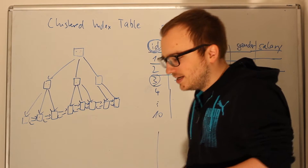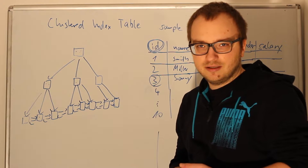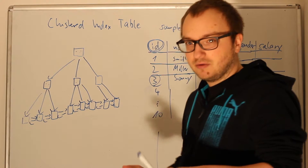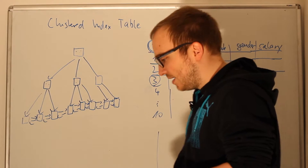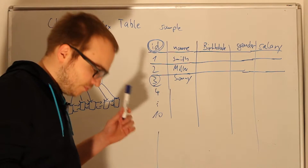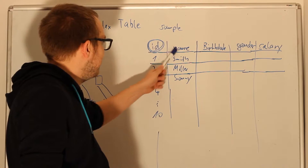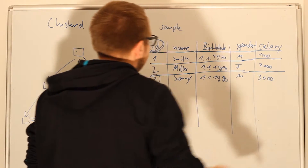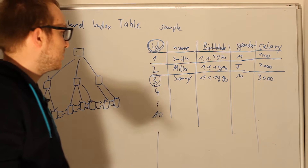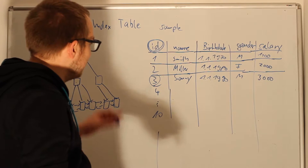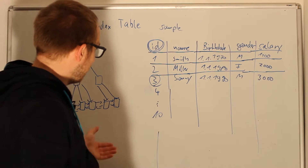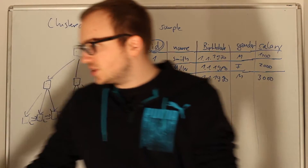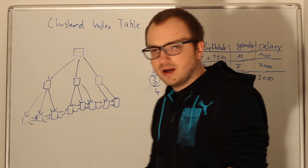So what we now want to cover is: we have a clustered index, but what about non-clustered indexes? What are they good for? We'll see. We already have a few more columns on our table — we had ID and name last time, and now we have birthday, gender, and salary. If I look for a special ID, for instance ID 5, we can just traverse this B-tree and get our answer very quickly.